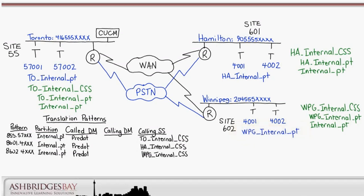Each site has a calling search space with its own site partition first and a common internal partition second. For example, the Toronto phones have the Toronto internal calling search space, which contains the Toronto internal partition and the internal partition. The Hamilton and Winnipeg sites have their own calling search spaces. The Toronto internal partition lets us use abbreviated dialing within Toronto, and the internal partition lets us dial between sites using access code 8, plus the site code, plus the extension. Each site has a site code: 55 for Toronto, 601 for Hamilton, and 602 for Winnipeg.